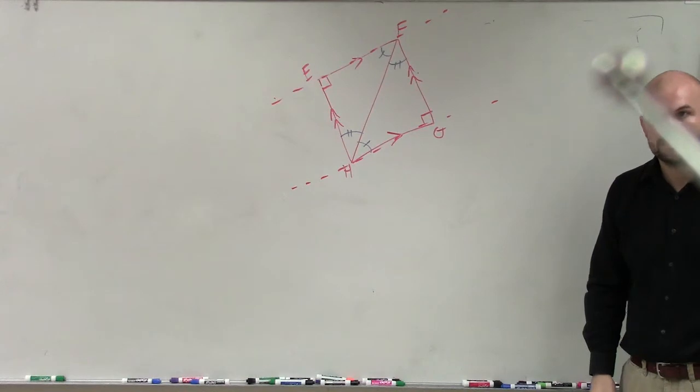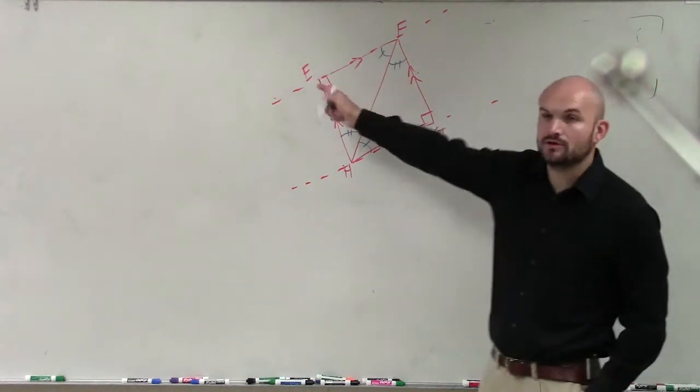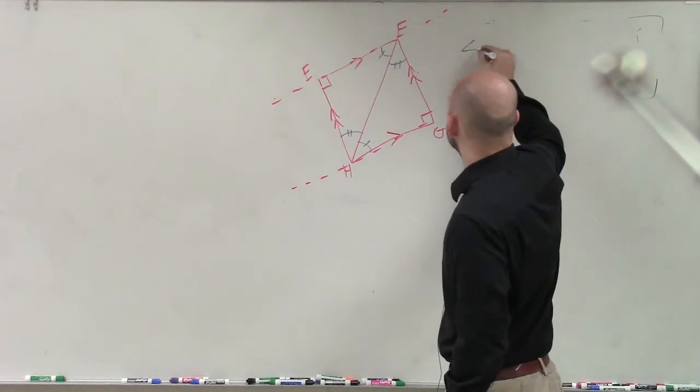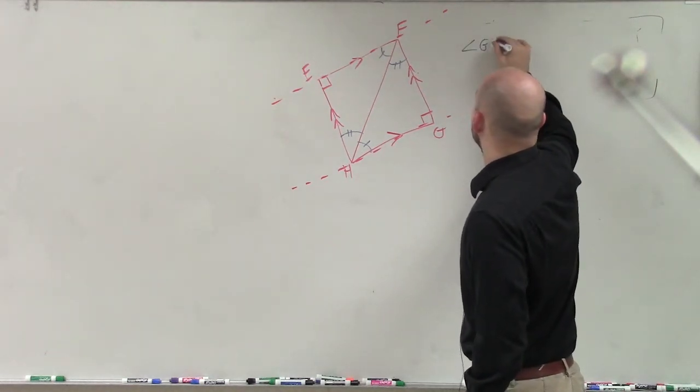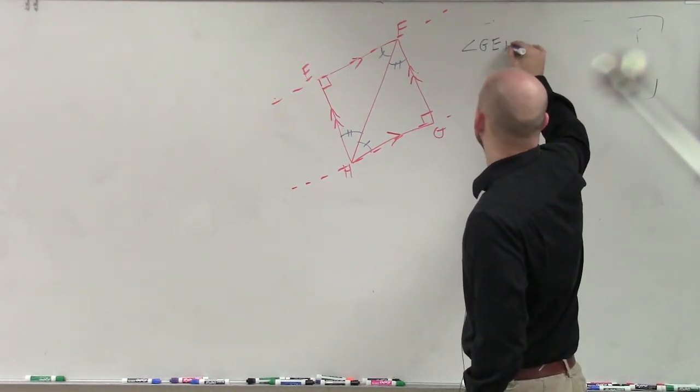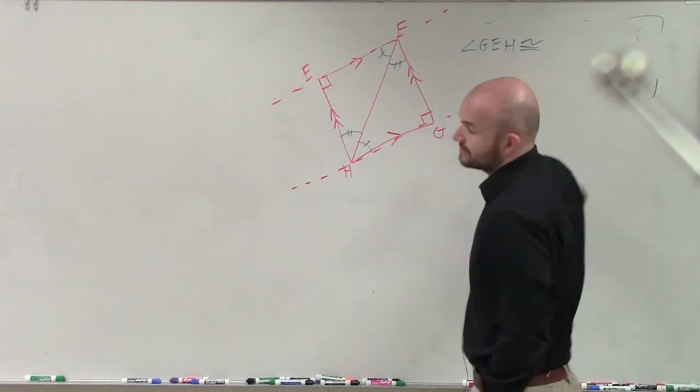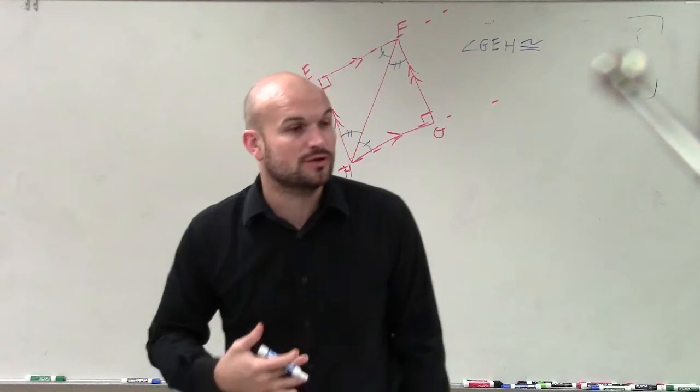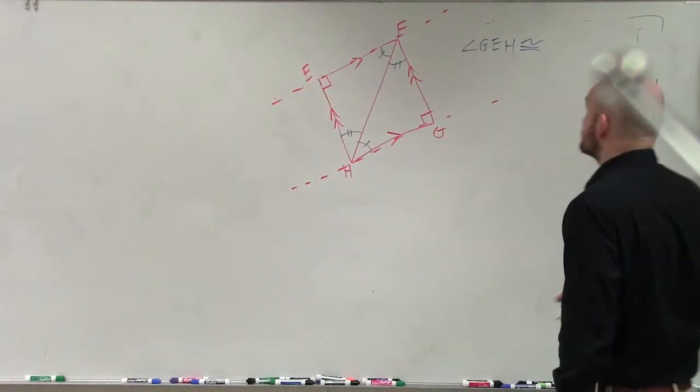Right? Yes? And then we already know G and angle E are congruent to each other. Now, to avoid confusion, I'm going to use three letters to write my congruency statement. Because what it's asking us to do is write a congruency or determine all the corresponding parts and then write a congruency statement.